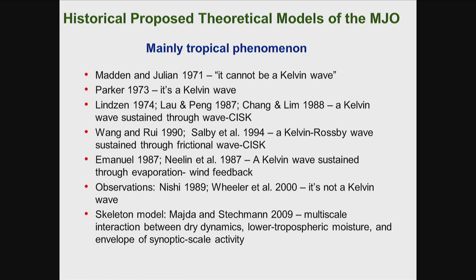In the work by Majda and Stechmann, they designed a skeleton model — looking at what is the minimum to generate this process. They use multiple interactions between three processes: dry dynamics, lower troposphere moisture, and the envelope of synoptic-scale activities. Through those multi-scale interactions, their model generates oscillations very similar to the MJO. Those are theories focused mainly in the tropics, saying it's a tropical phenomenon.